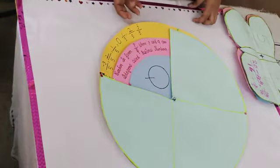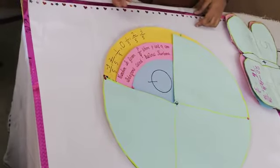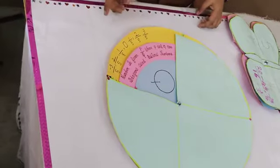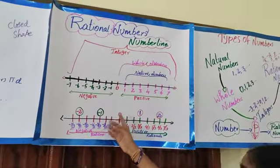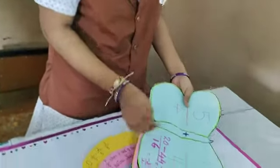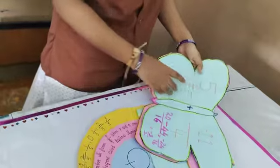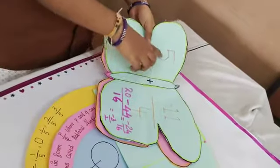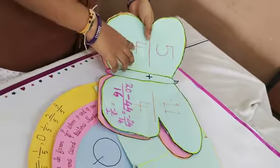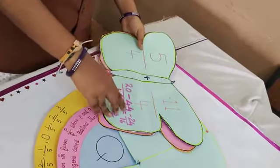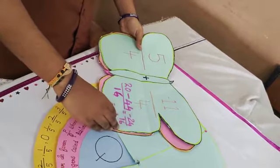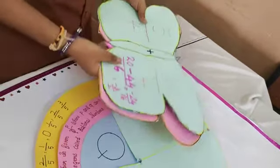The numbers that can be expressed in the form of P by Q, where P and Q are integers and Q is not equal to zero, are called rational numbers. Positive numbers lie on the right side of 0, and negative numbers lie on the left side of 0. Using the butterfly method: 5 by 4 plus minus 7 by 4. 5 into 4 equals 20, and 4 into minus 7 equals minus 28. If we subtract these numbers, we get minus 24 by 36, and the answer is minus 3 by 2.